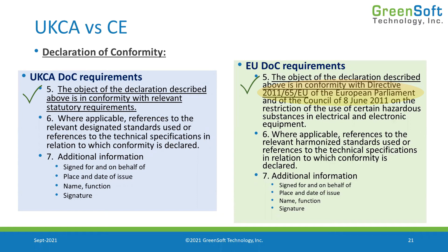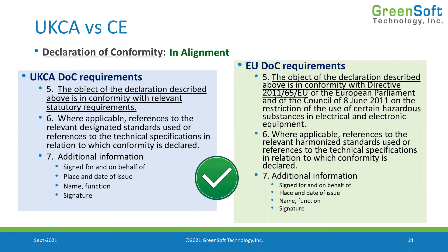Item number six: you have to reference the designated or harmonized standards, and any additional required information should be included. Then it needs to be signed — name, function, signature, that kind of thing. So when you compare the two lists of requirements that need to go into the DoC, they're in alignment. There's nothing new in the UK DoC that's not required in the EU DoC, although the actual information will be different.